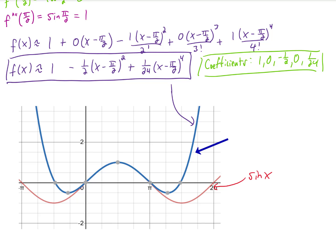This blue graph, or this Taylor series, approximates the sine of x function, and that approximation is better and better the closer our x value gets to pi over 2. So that's what it means for a Taylor series to be centered at a value.